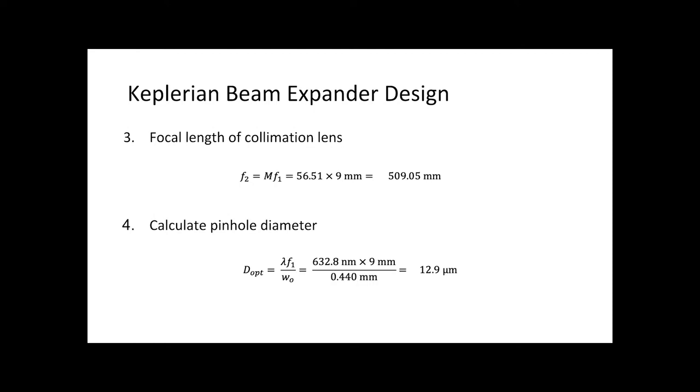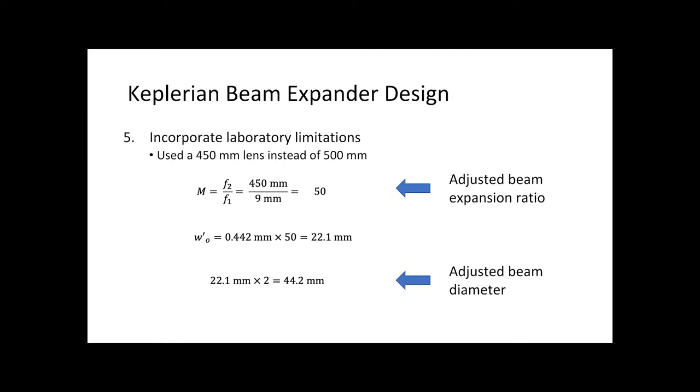Due to availability of parts, we used a 15 micron spatial filter and a 450mm focal length collimation lens. As with last week, we determined the necessary components by using the ratio of the expanded beam to the initial beam waist times the focal length of our objective.